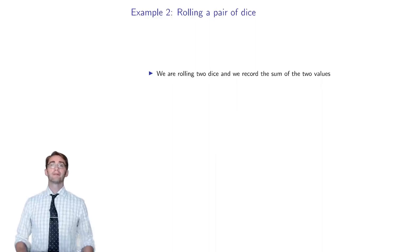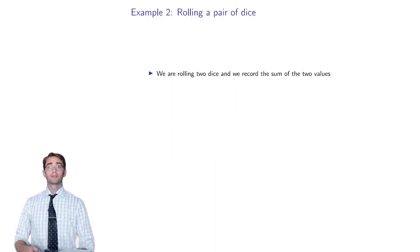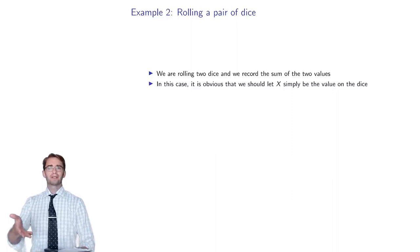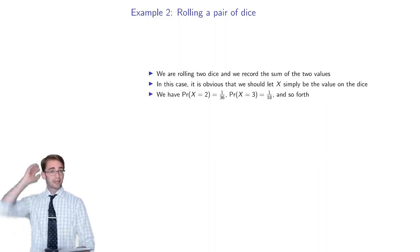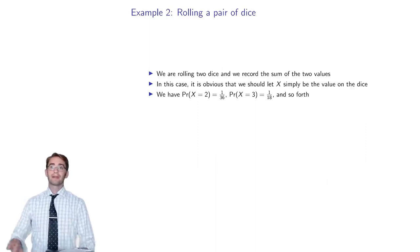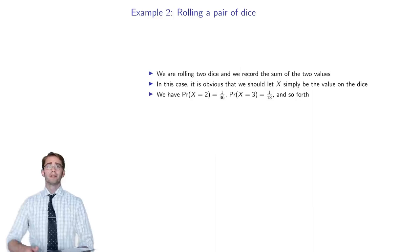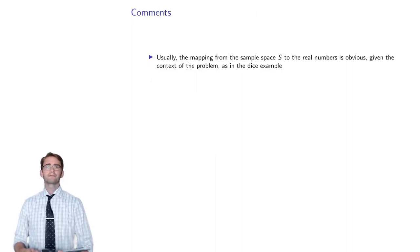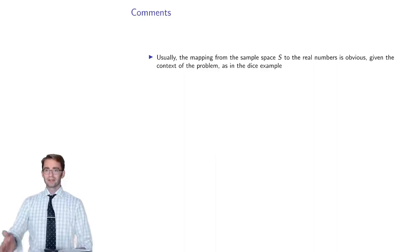When rolling a pair of dice and recording the sum between 2 and 12, it's more obvious what the mapping should be, since the outcomes are already numbers. The probability that x equals two would be one in 36, because that's rolling ones on both dice. Usually the mapping from the sample space to the real numbers is obvious, or if it's not obvious, it's arbitrary and up to you to choose.